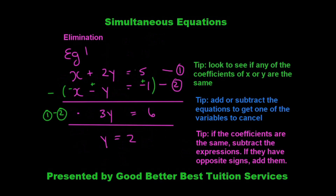Now elimination is a little bit different. We are given two equations: x plus 2y is equal to 5, and x minus y is equal to minus 1 — again labeled equation 1 and equation 2. What we look for here is whether any of the coefficients of x or y are the same. We see that x and x both have an invisible coefficient of 1 — the coefficients are the same. So we add or subtract the equations to get one of the variables to cancel — in this case it will be x that cancels.